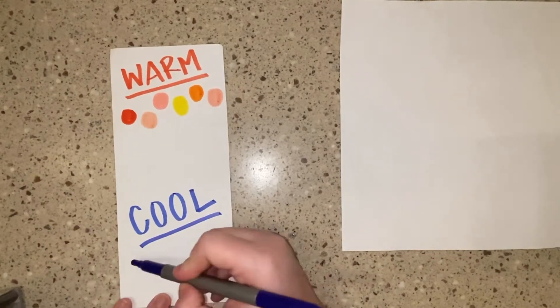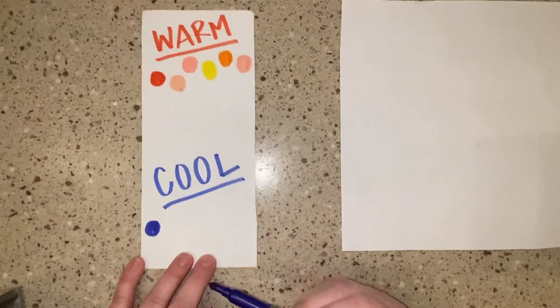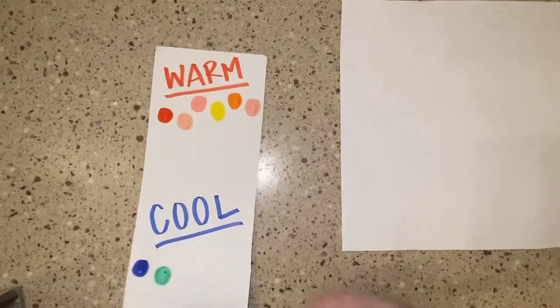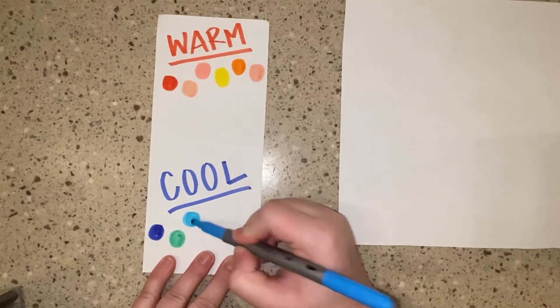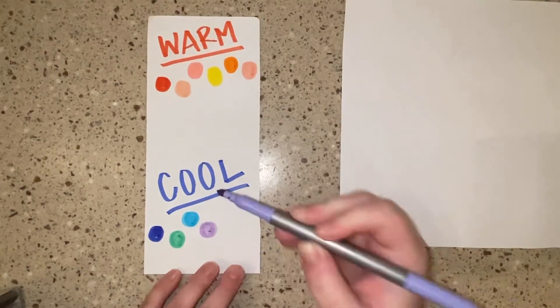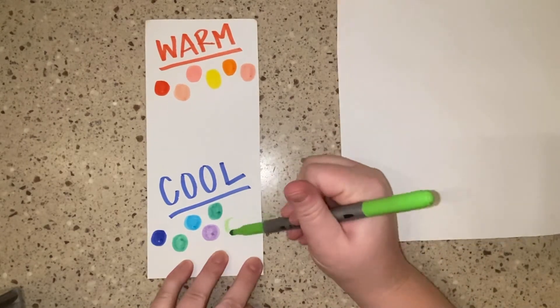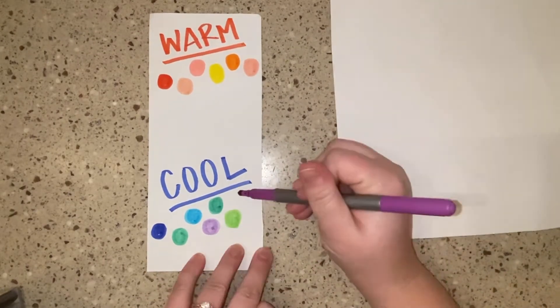Cool colors are the colors that make us think of cool things like cold water. It's also the colors that make us feel calm: blues, purples, greens, any variation of those colors are our cool colors.